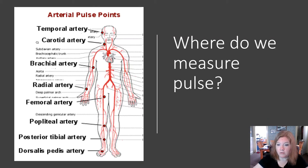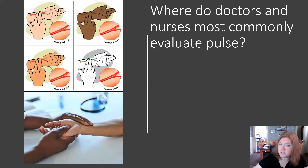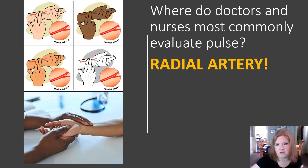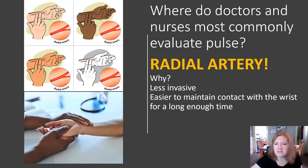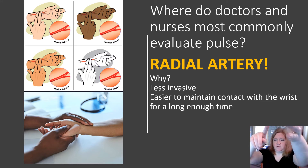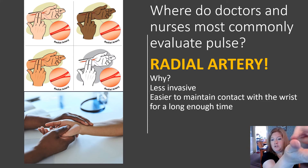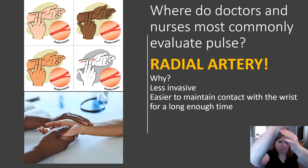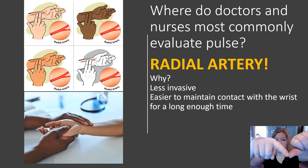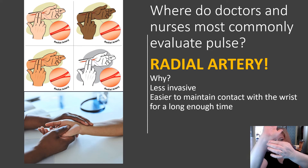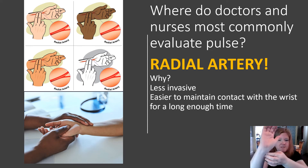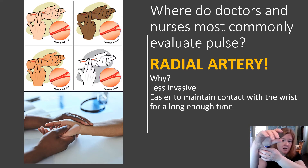Where do we measure pulse? There are many places, but doctors and nurses most commonly evaluate pulse at the radial artery. It's less invasive and easier to maintain contact with the wrist. The radius is on the thumb side of your wrist — press down there and you'll feel it. Remember: do not use your thumb, as your thumb has its own arterial pulse that will confuse your count. Flexing your wrist slightly helps you feel the pulse better.